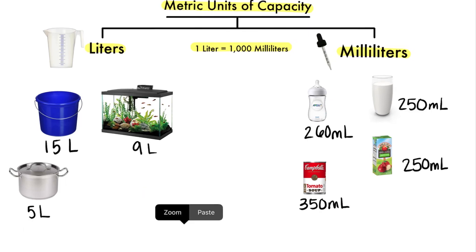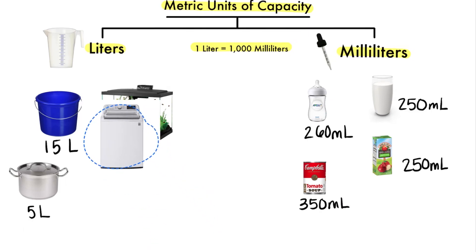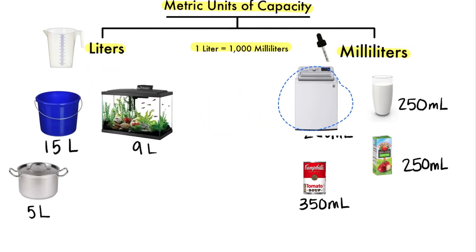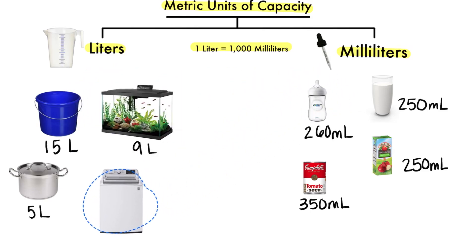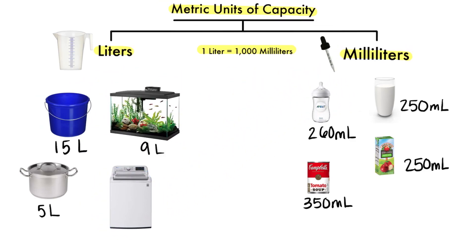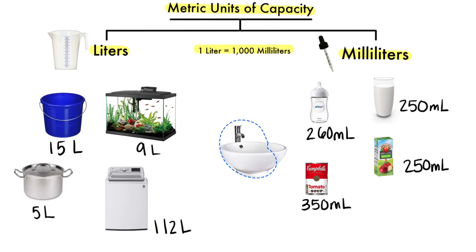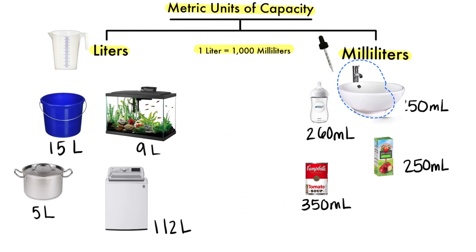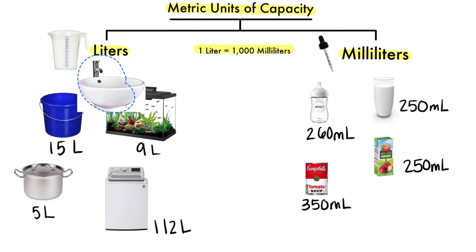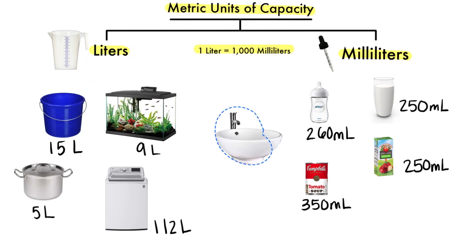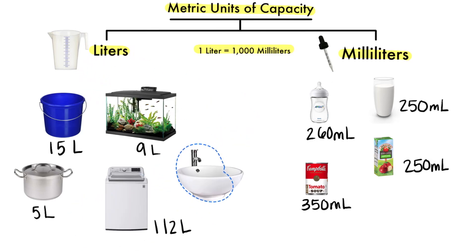Now how much capacity would a washing machine hold — liters or milliliters? I would say liters. A washing machine has a capacity of 112 liters. What about a sink? Would the capacity of a sink be in milliliters or liters? I say liters for sure, and a sink can actually hold 32 liters of liquid.